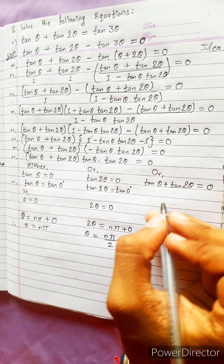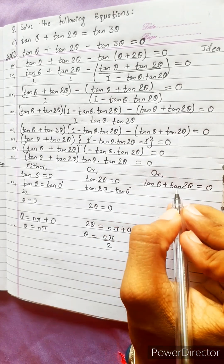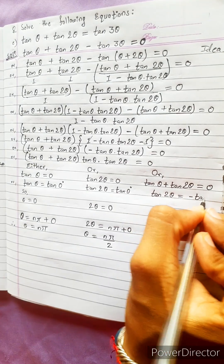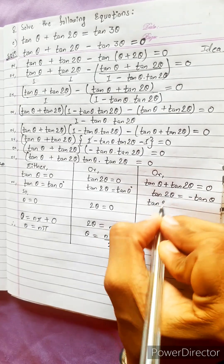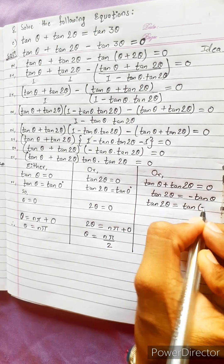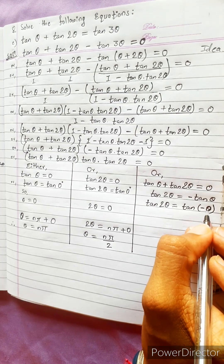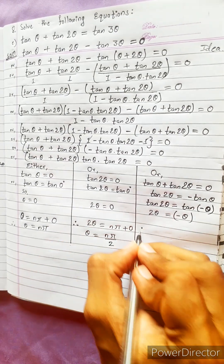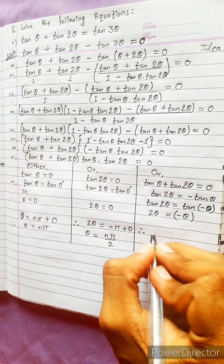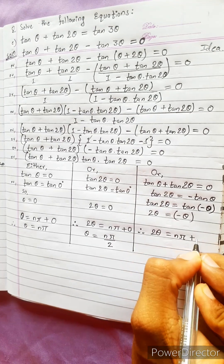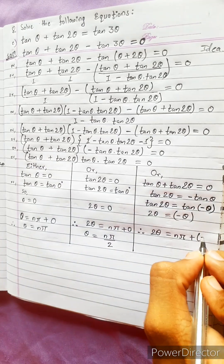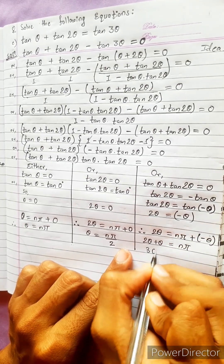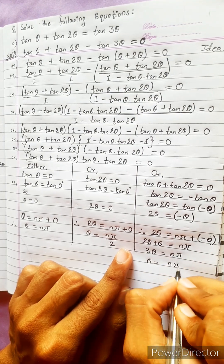For the third case, tan θ + tan 2θ = 0. We have two choices — take tan θ to the other side or tan 2θ. Let's take the smaller one: tan 2θ = -tan θ. Using the identity -tan θ = tan(-θ), we get tan 2θ = tan(-θ). The general solution gives 2θ = nπ + (-θ), so 2θ + θ = nπ, giving 3θ = nπ, therefore θ = nπ/3.